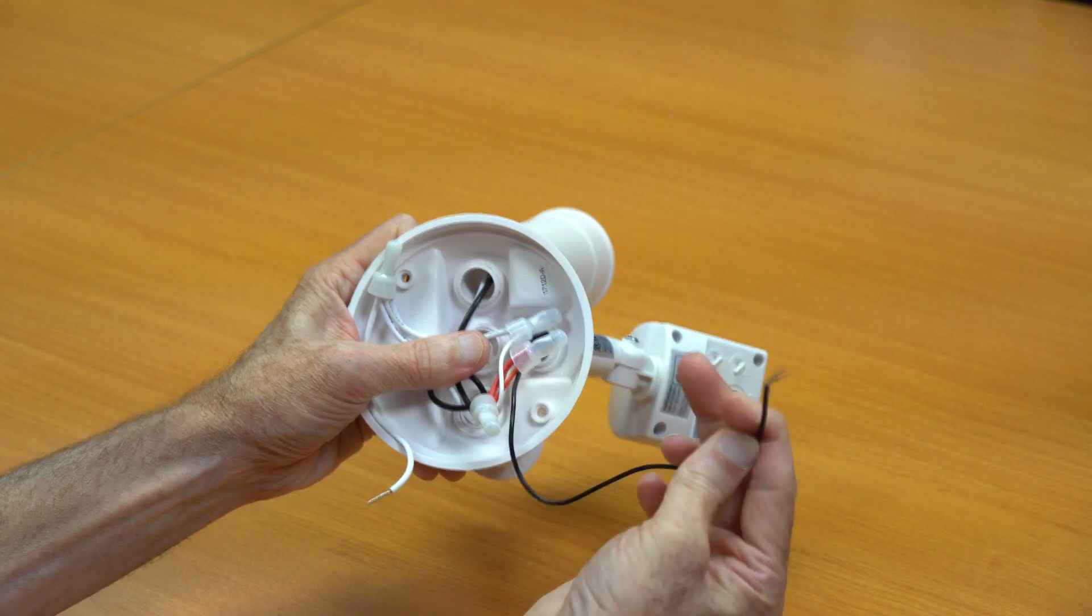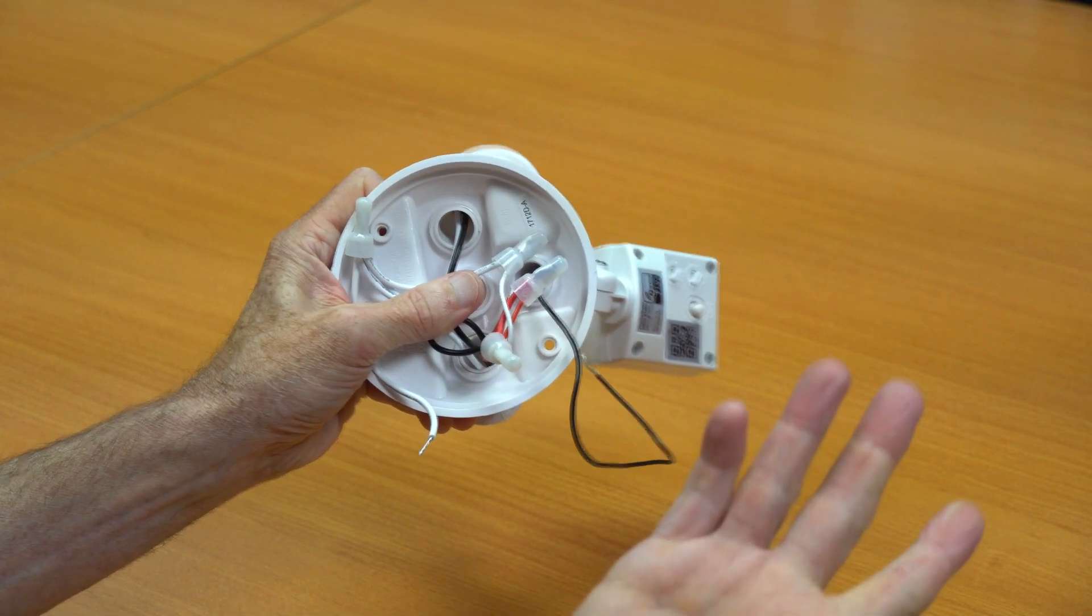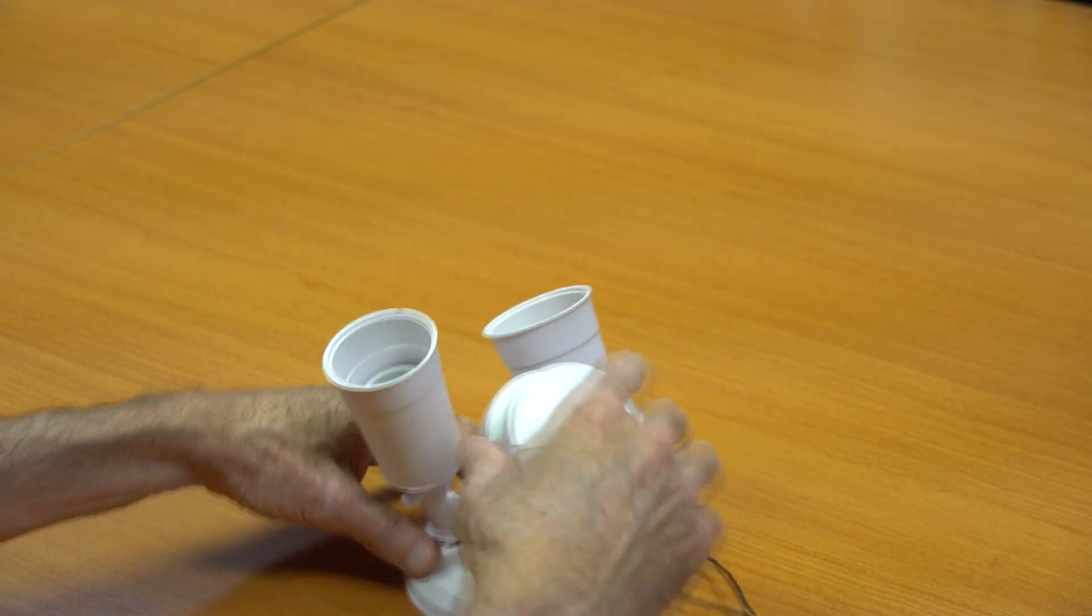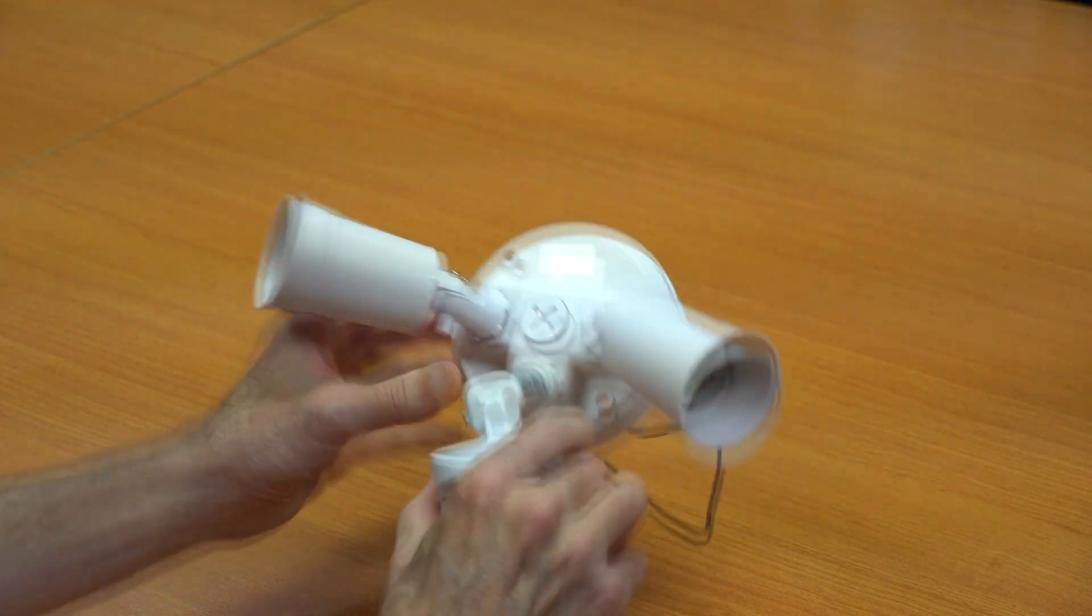When you do so, remember the black wire goes to hot and the white wire goes to neutral. Once it's mounted on the house, you can test it for operation, make sure the motion works okay, and you'll be able to add it to your smart home system.